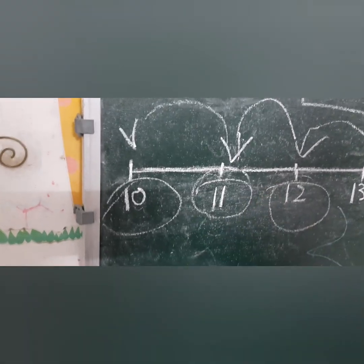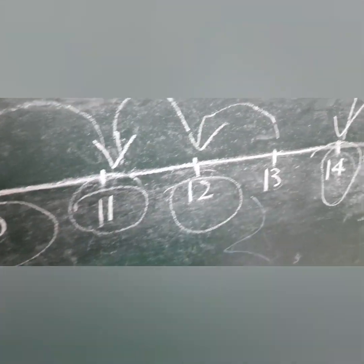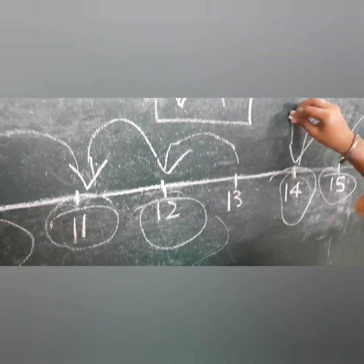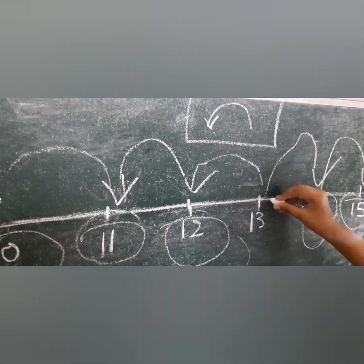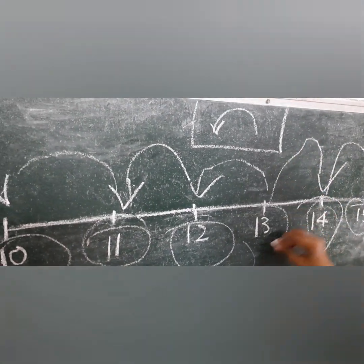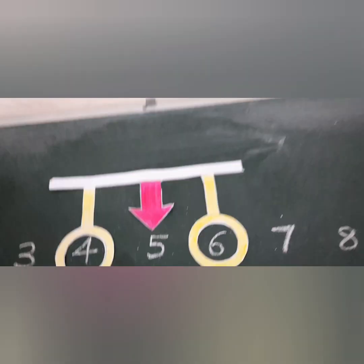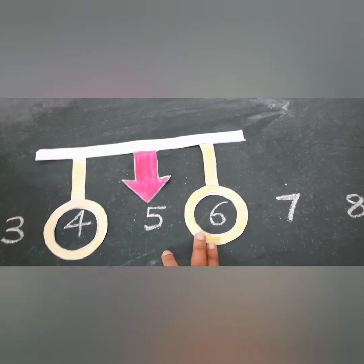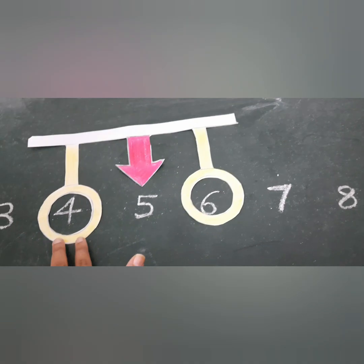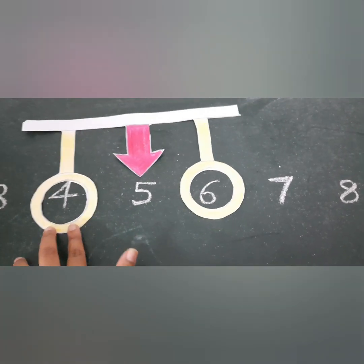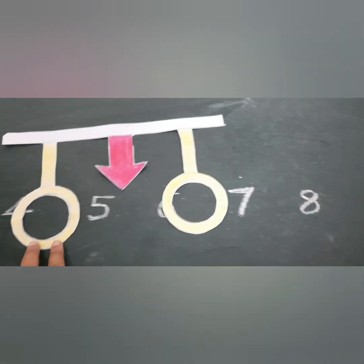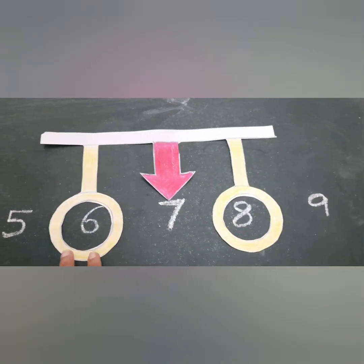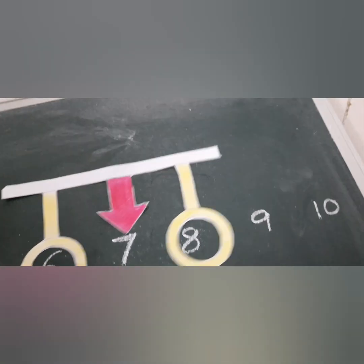Now what comes between 4 and 6? 5 — very good. What comes between 6 and 8? 7 — very good.